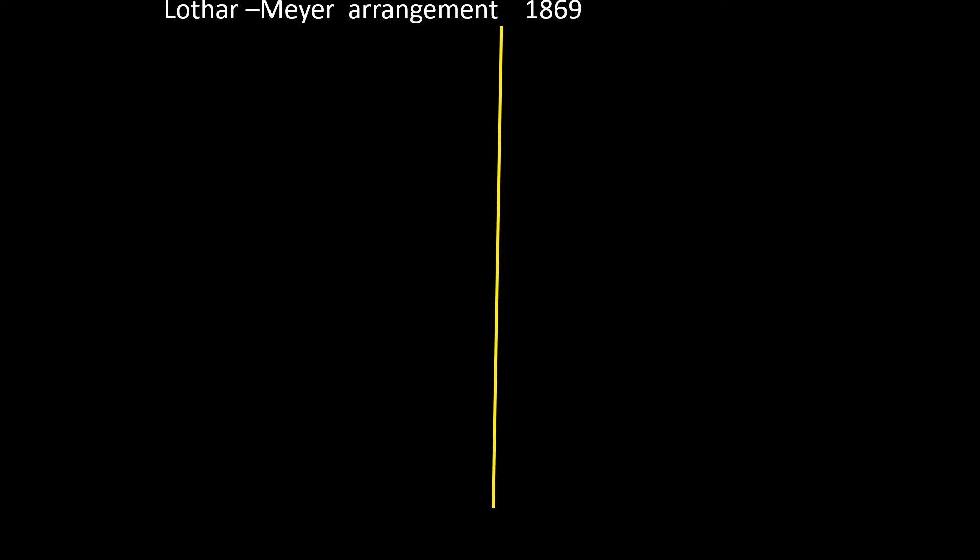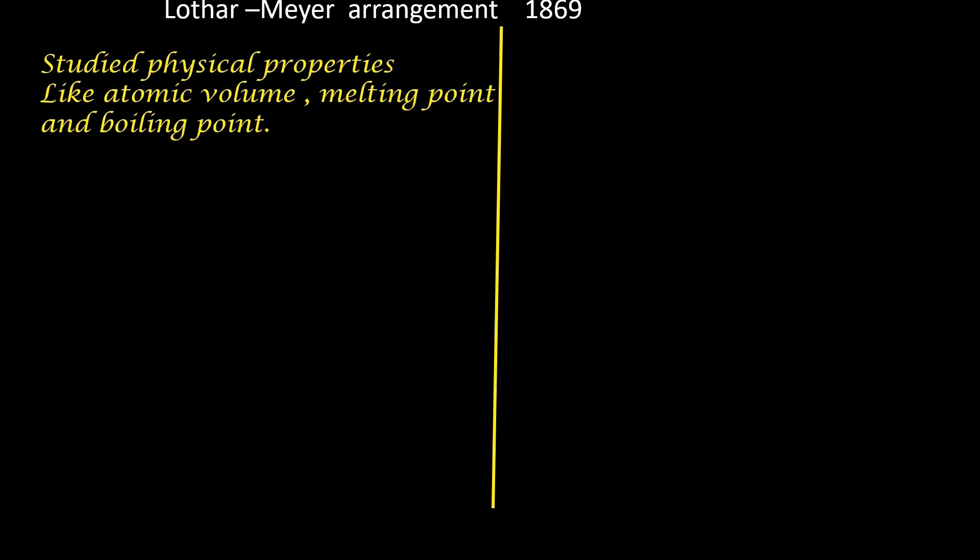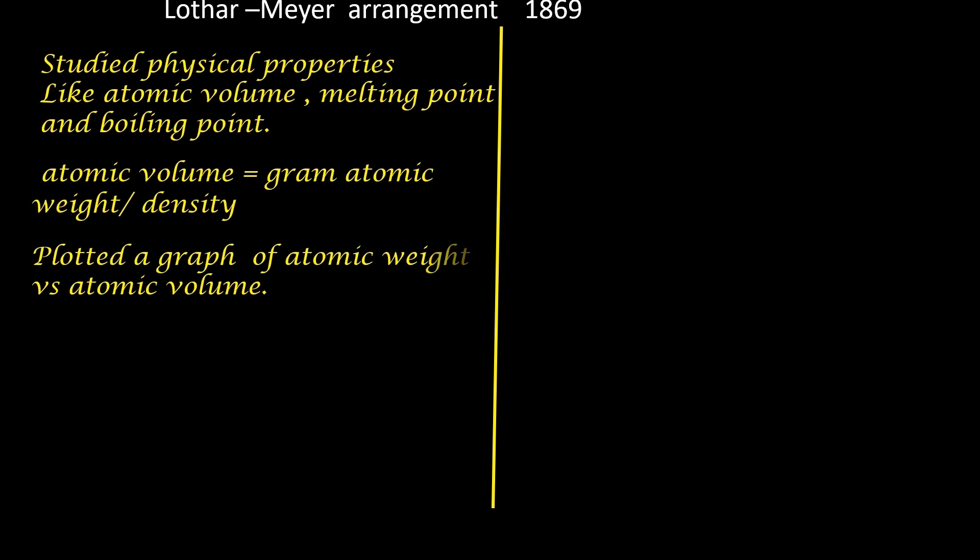In 1869, Lothar Meyer came up with an arrangement. He studied physical properties like atomic volume, melting point, and boiling point of elements. Density is mass per volume, that is mass divided by volume. So atomic volume is equal to gram atomic weight divided by density of the atom. Using these values, he plotted a graph, that is atomic weight versus atomic volume. Atomic weight is taken along the x-axis and atomic volume is taken along the y-axis. The shape of the graph is more or less like this. This graph as you see has so many peaks.